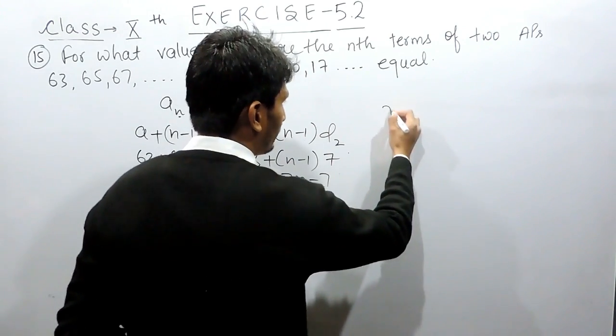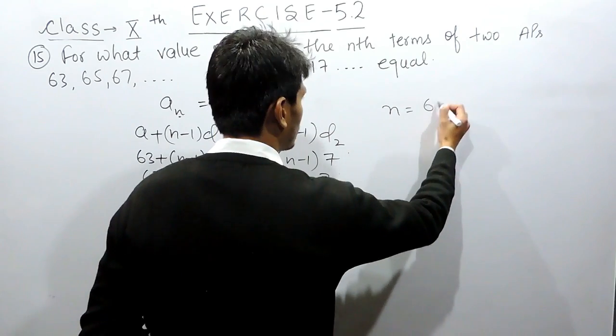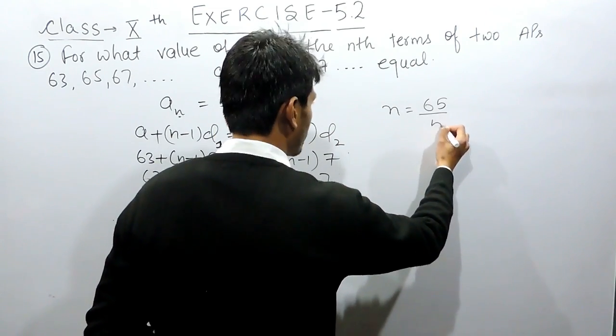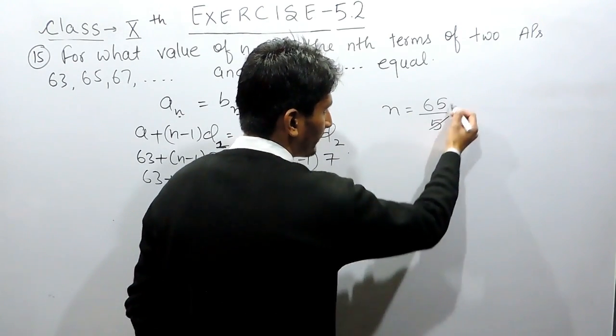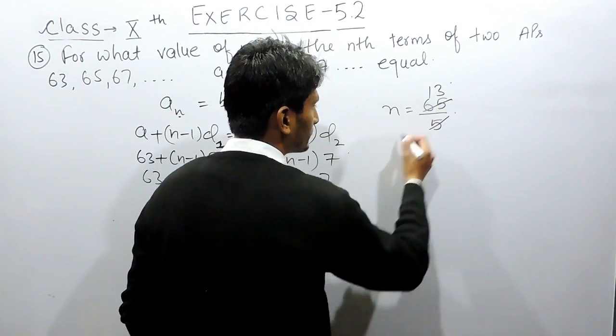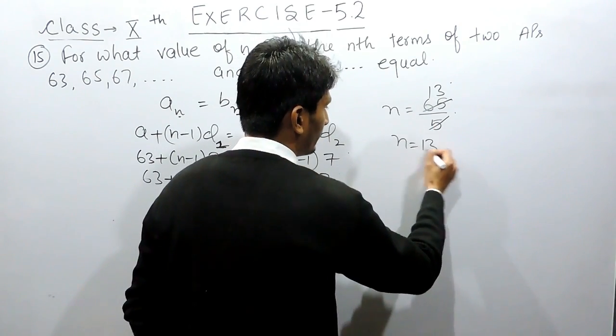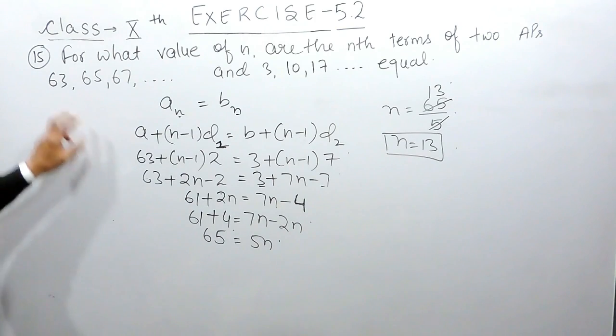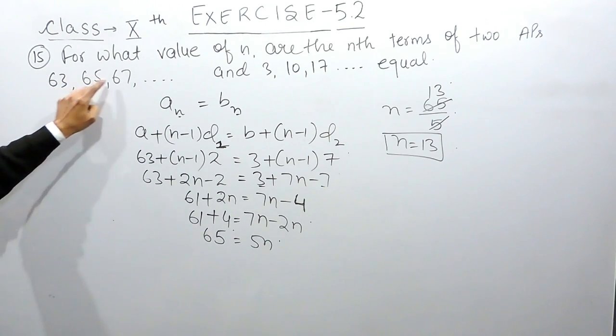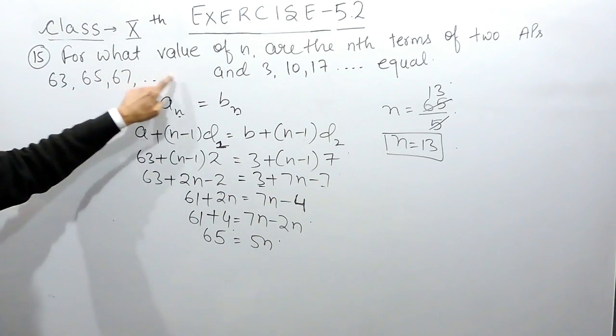So to find the value of n I have to divide this by 5. So this will be 5 times 13. So here the value of n is 13, meaning this is the first term, second term, third term and fourth, fifth, sixth and so on.